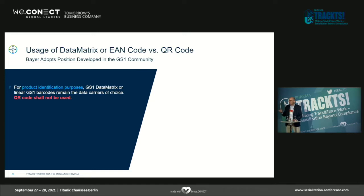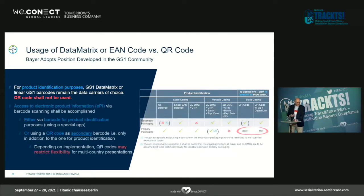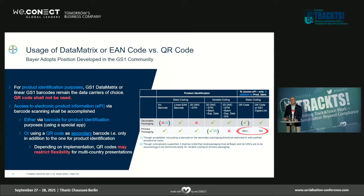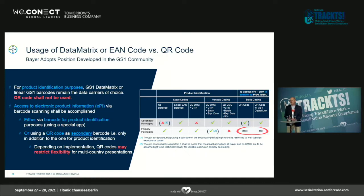Is there a role for QR inside Bayer? Yes — the role of QR comes from the use case of accessing product information. We see the need to ease access to product information, which should ideally be achieved via a dedicated app using the existing GS1 data matrix or linear barcode. But since we cannot expect that in each country there will soon be someone like VFA in Germany or the Spanish authorities who will develop such an app, the QR code is acceptable to access electronic product information — but always only in addition to the code used for product identification.